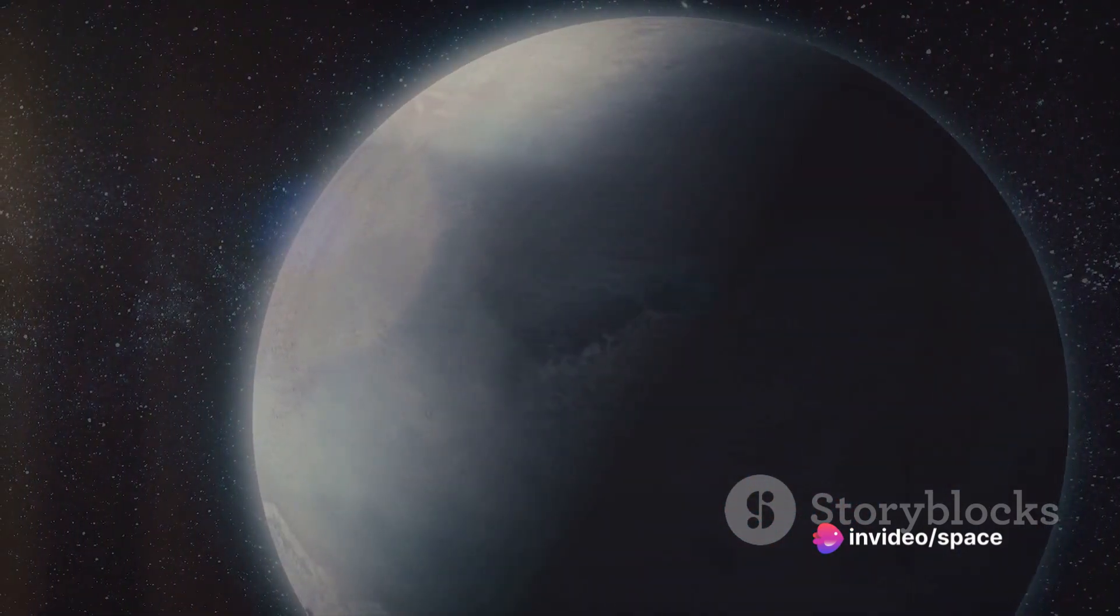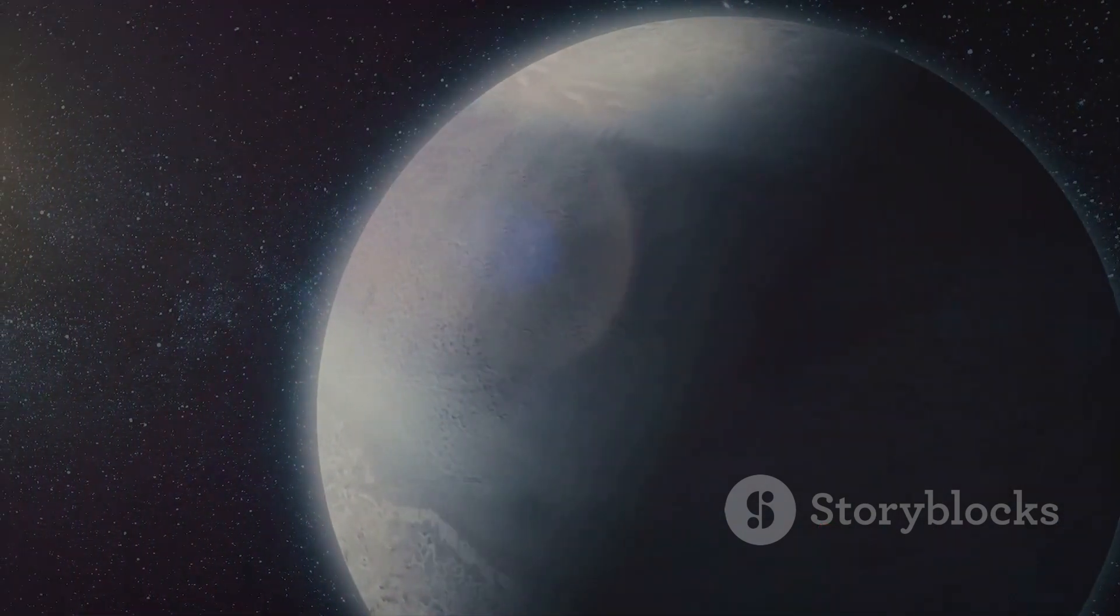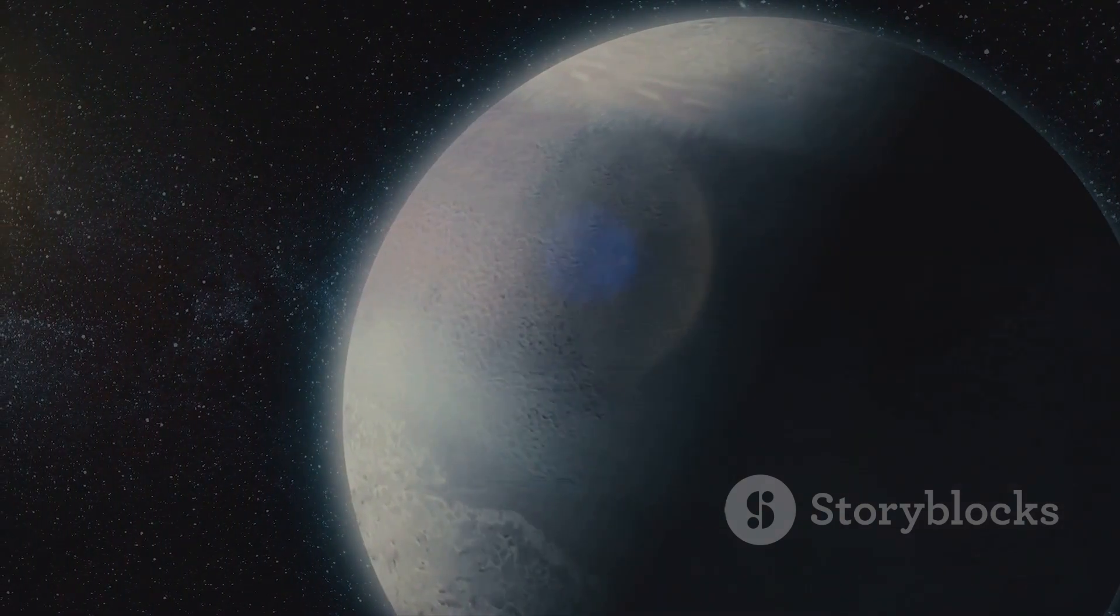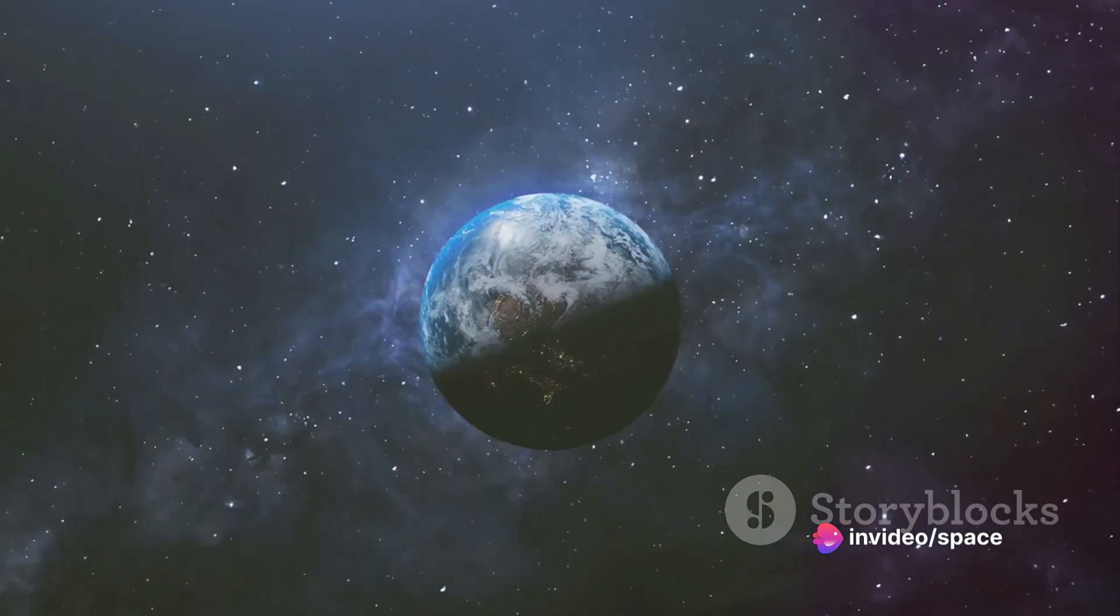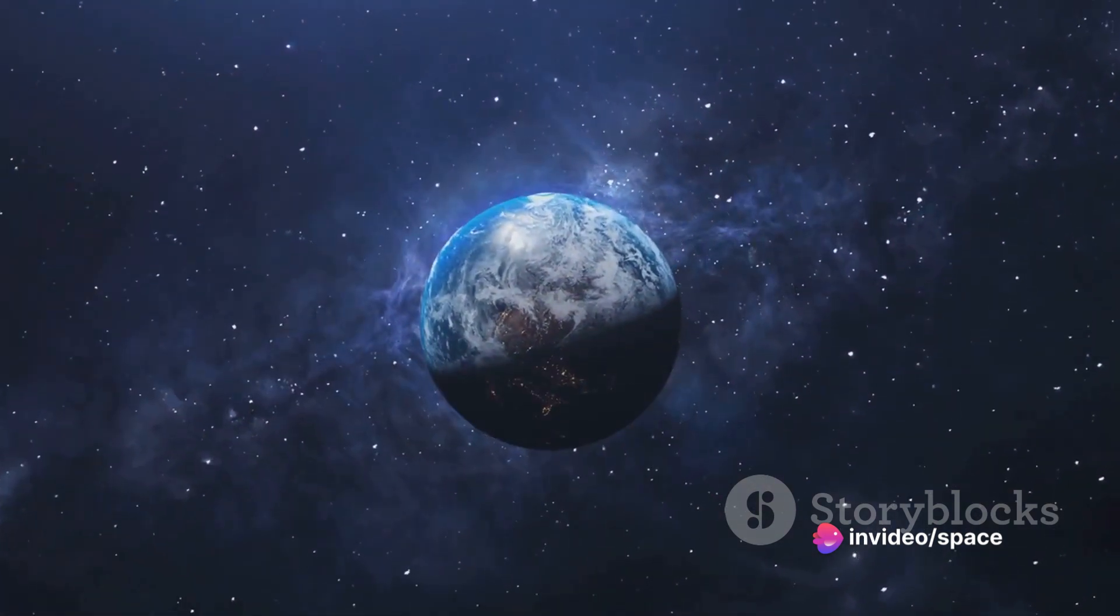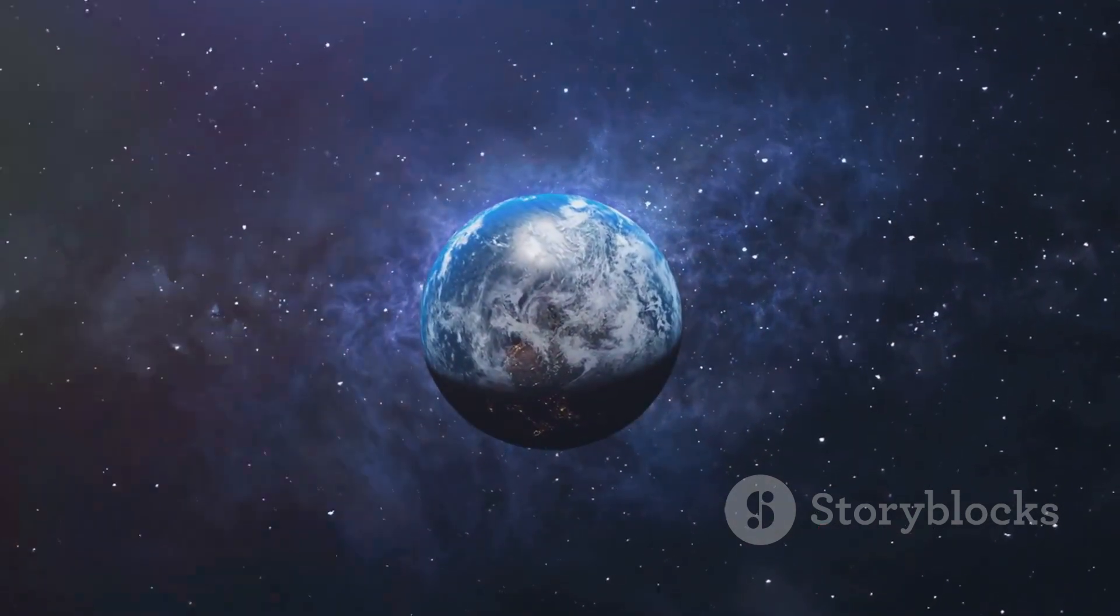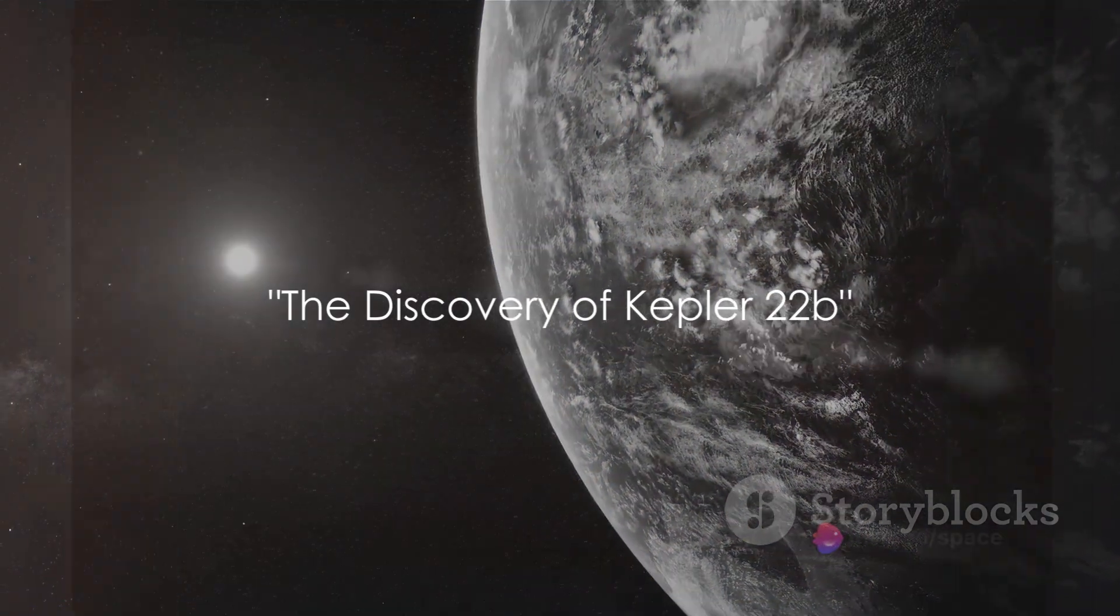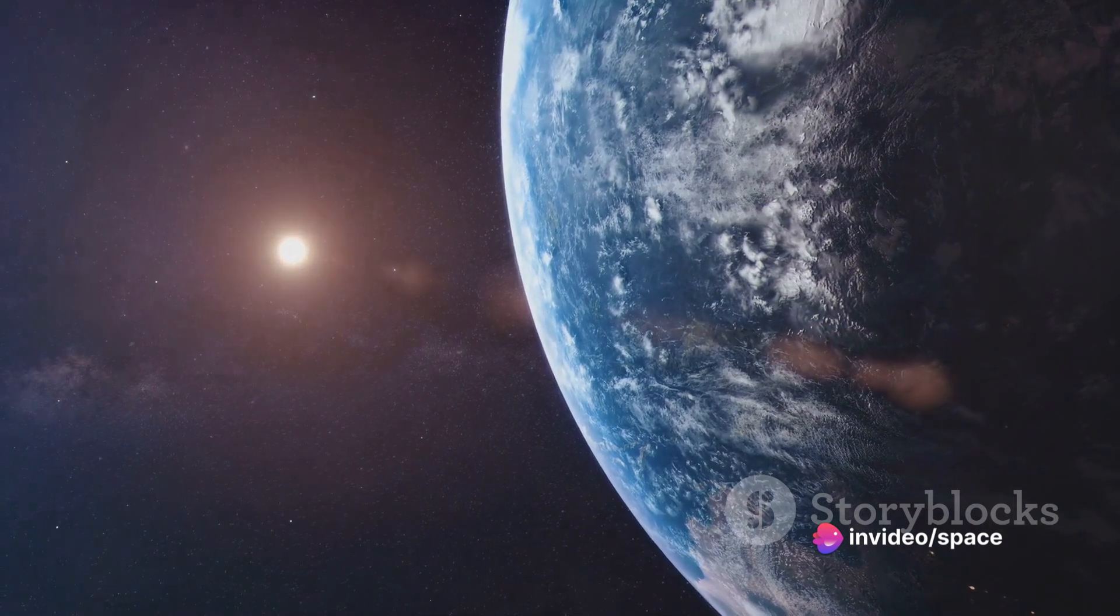The discovery of Kepler-22b marked a milestone in the search for planets that are not only in the habitable zone, but also Earth-sized. It opened the door to a universe of possibilities, showing us that our little corner of the cosmos isn't as unique as we once thought. There are other worlds out there waiting to be discovered. The year was 2009, the Kepler Space Telescope was staring at a patch of sky when it noticed something intriguing.